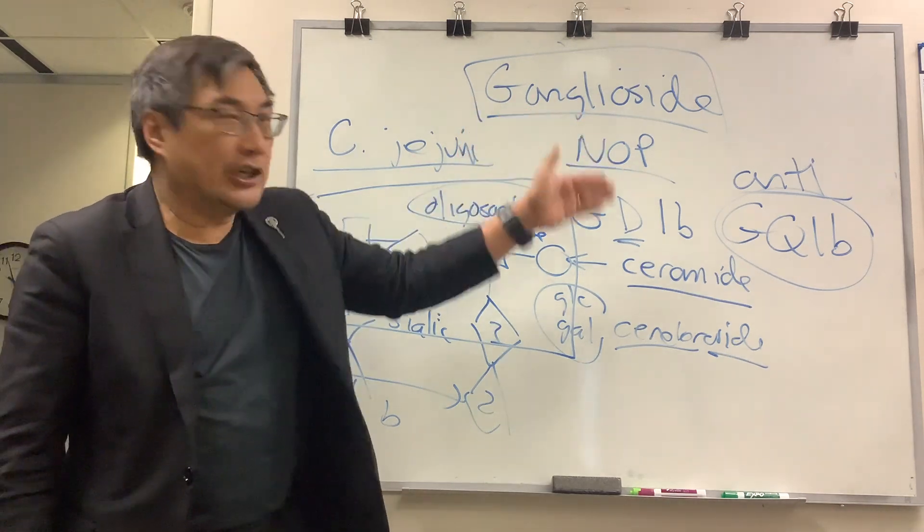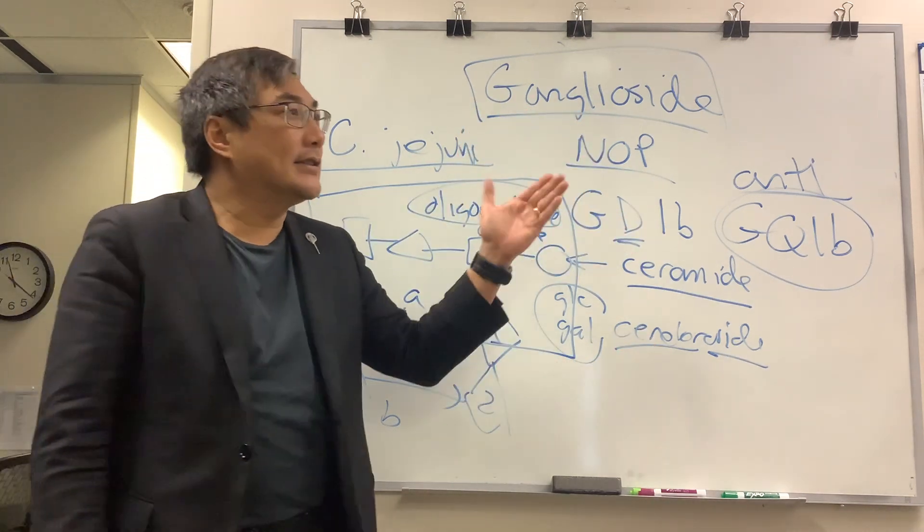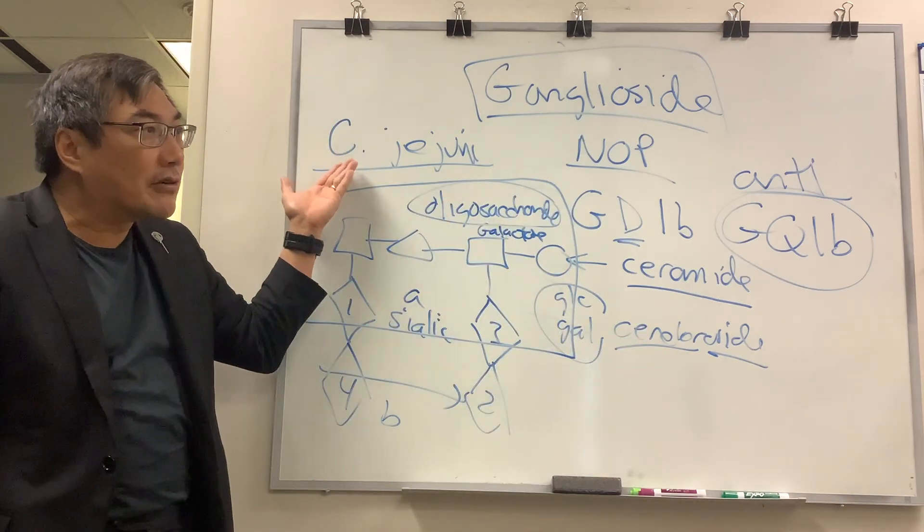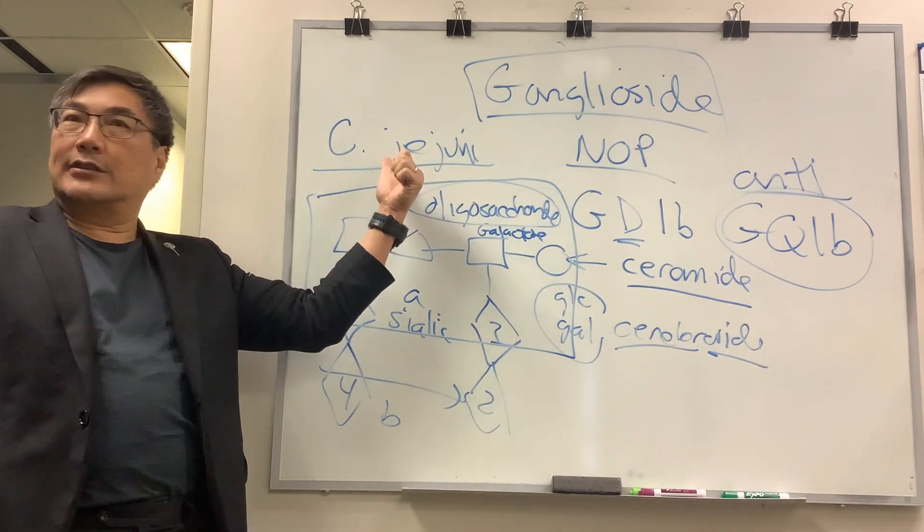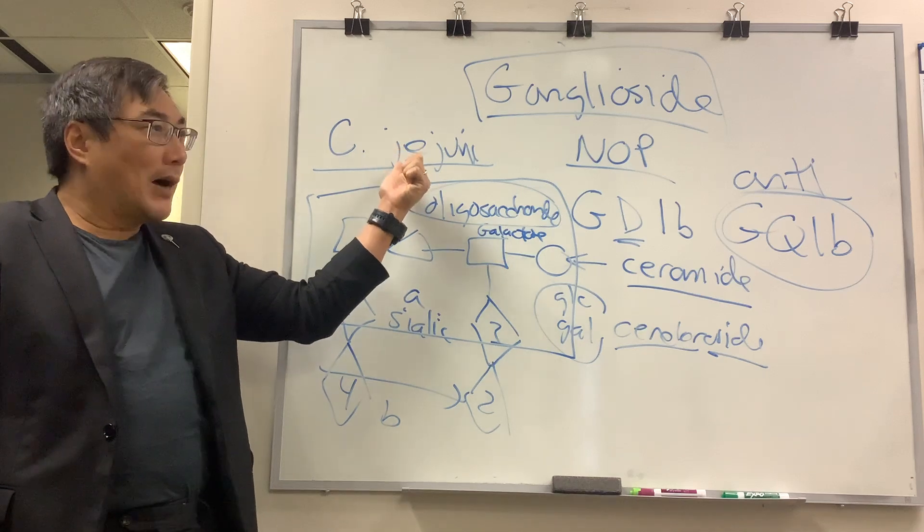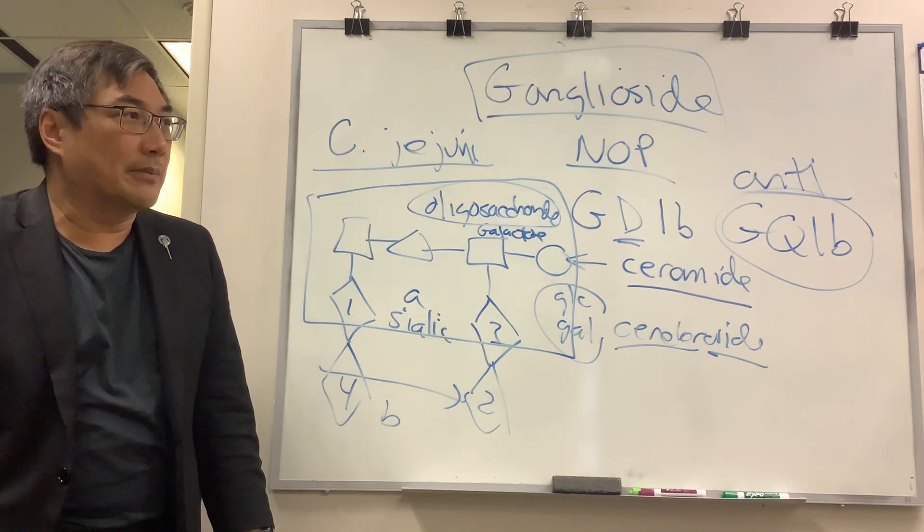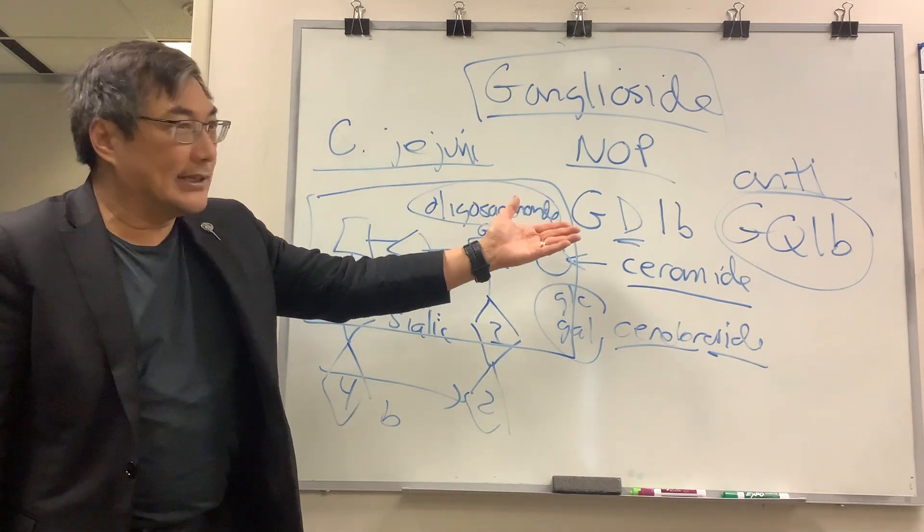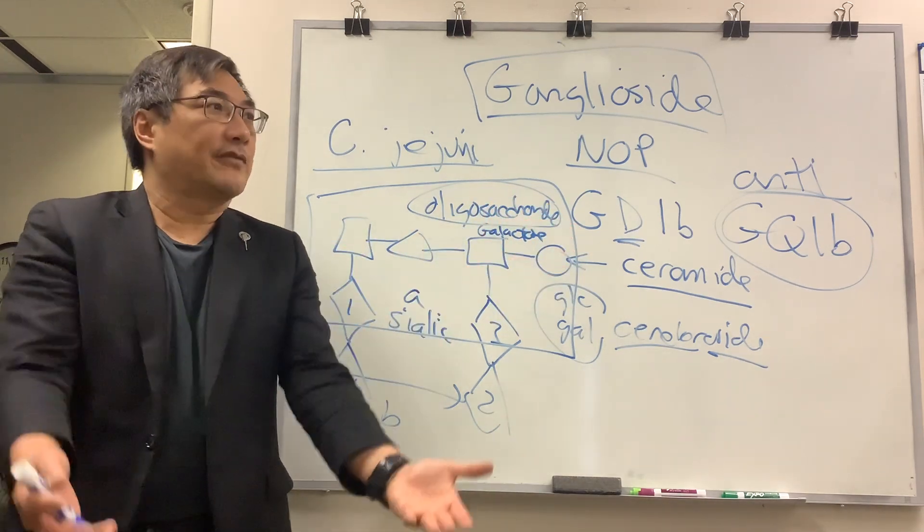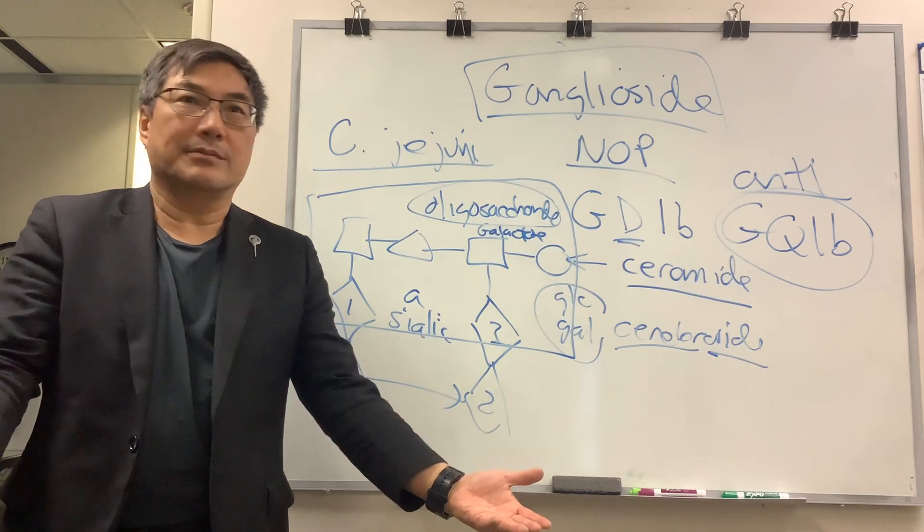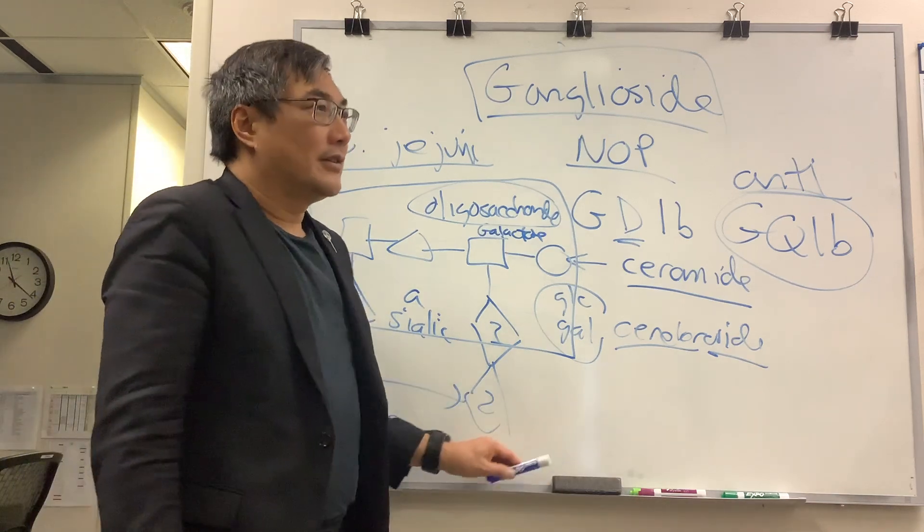Anti-GQ-1B antibody is the result of molecular mimicry against the ganglioside core molecule sticking out of C. jejuni's oligosaccharide cell membrane, leading to the disease that we call Miller-Fisher variant Guillain-Barré syndrome. Got all that?